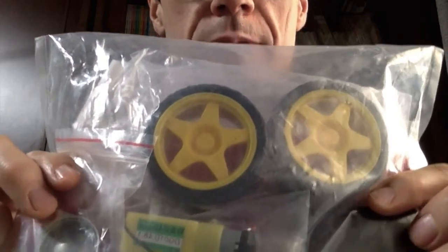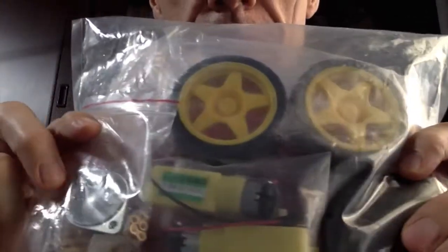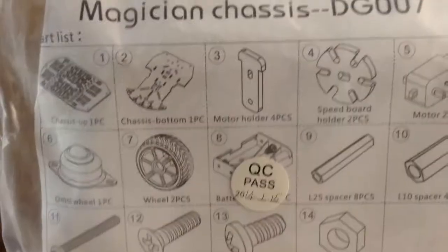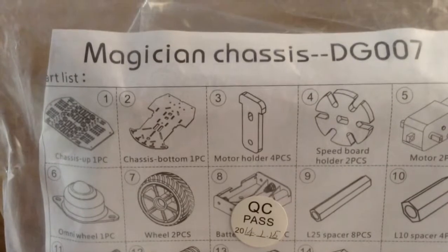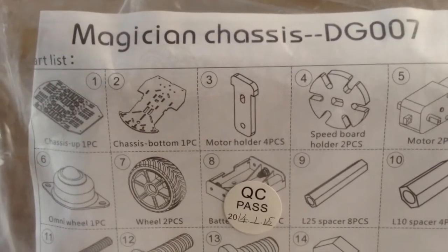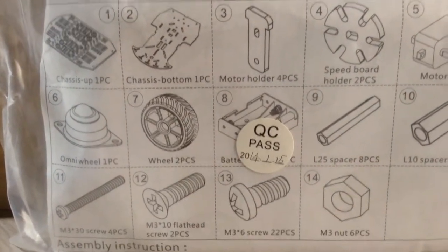DG007 and here it is in the bag. You can see there's some wheels, a couple motors, a battery holder, and once we unseal the bag we'll have a closer look. Here we can see the package. It says Magician Chassis DG007 and shows some of the parts that are inside and the quantities.